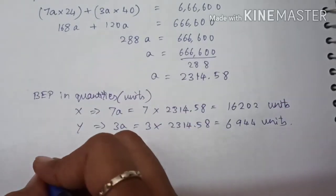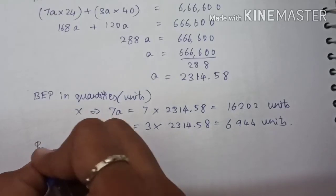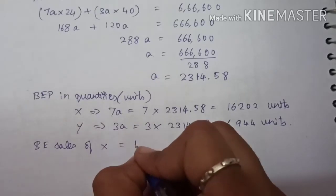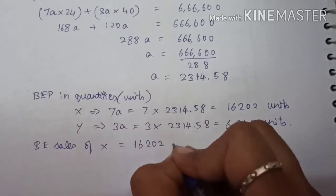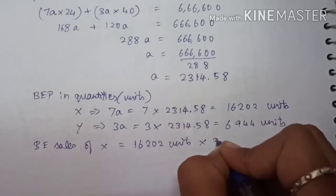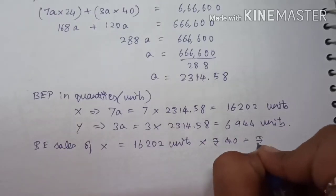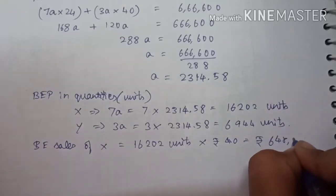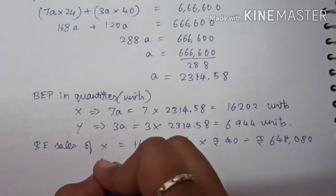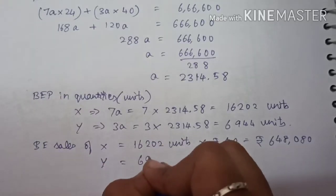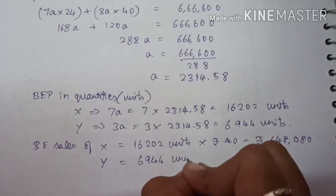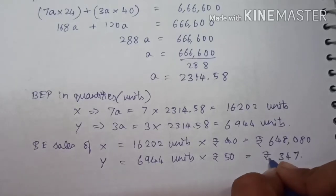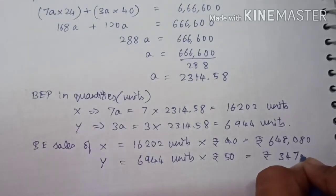Now calculate the break-even sales. Break-even sales of X: 16,202 units × Rs.40 selling price = Rs.6,48,080. Break-even sales of Y: 6,944 units × Rs.50 selling price = Rs.3,47,200.